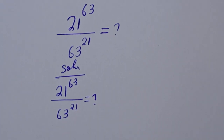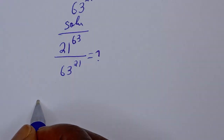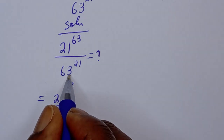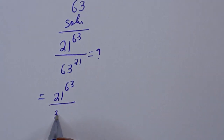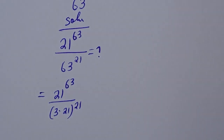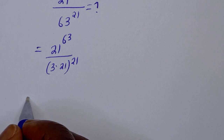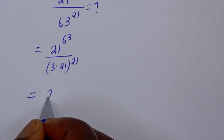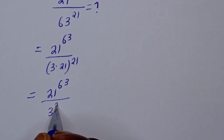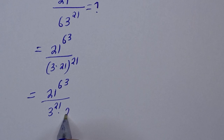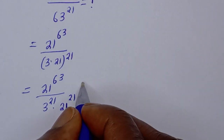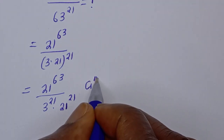This is equal to 21 raised to power 63 divided by 63, which can be written as 3 multiplied by 21, to the power of 21. Then this is equal to 21 raised to power 63 divided by 3 raised to power 21 multiplied by 21 raised to power 21.